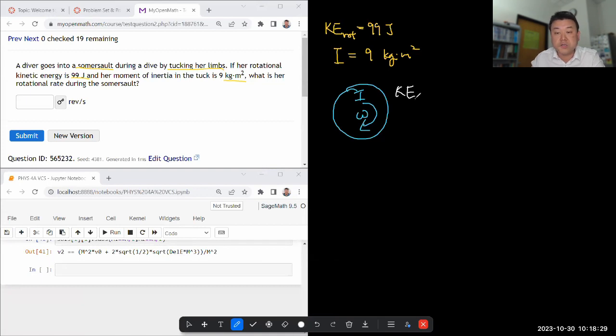Rotational kinetic energy, by analogy to translational kinetic energy, you can guess it's one-half, rotational version of one-half, times I, rotational version of mass, times omega squared, rotational version of V squared.